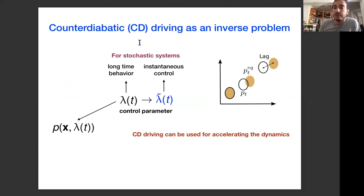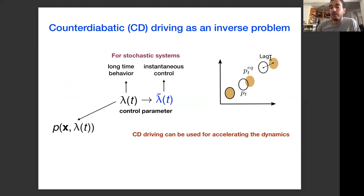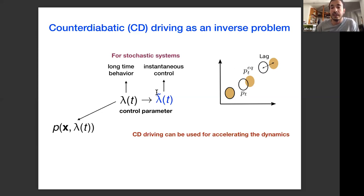Formally, we assign a control parameter λ and calculate the long-time stationary distribution for each value of λ. If you apply this as a controlling field directly, the actual system always lags behind the desired state. So we calculate the counter-diabatic correction — a modified control parameter — to keep up with the desired trajectory by compensating for the lag.